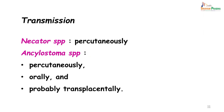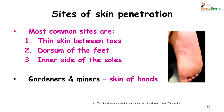Necator species are transmitted percutaneously. Ankylostoma species, besides percutaneous transmission, can also be transmitted orally and probably even transplacentally. The sites of penetration in the skin are usually the thin skin between the toes, the dorsum of the feet, and the inner side of the soles. In the case of gardeners and miners, the skin of the hands may also be a site of entry.